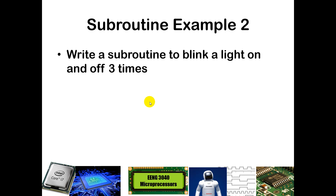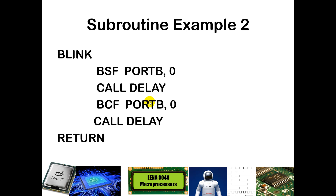Here's another subroutine example: we want to blink a light on and off. We'll call it subroutine blink. It has a label blink and a return at the end. Inside, it sets port B bit 0, calls a delay subroutine to keep the light on long enough to see it, then clears port B bit 0 to turn the light off, and calls another delay. So the subroutine performs one blink cycle: on, delay, off, delay.